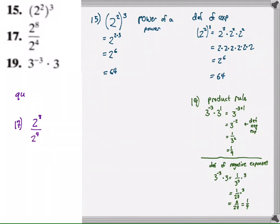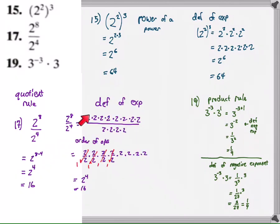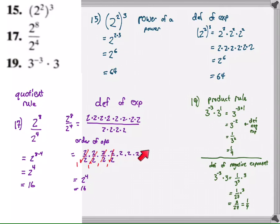The last example on this slide is 2 to the eighth over 2 to the fourth. The shortcut: the bases are the same, so subtract the exponents — 2 to the fourth, which is 16. With definition of exponents, you can write out 8 factors of 2 over 4 factors of 2 in the denominator. Then by order of operations — multiply and divide in any order — cancel the common factors and count the remainder: 4 factors of 2 in the numerator.